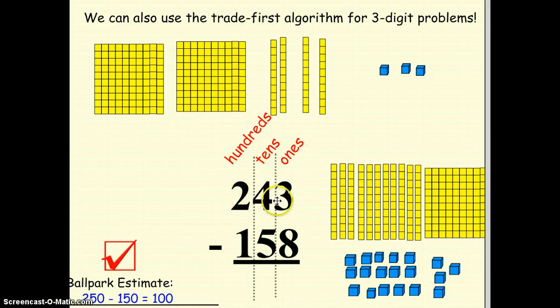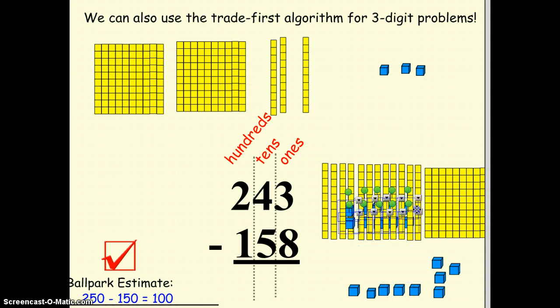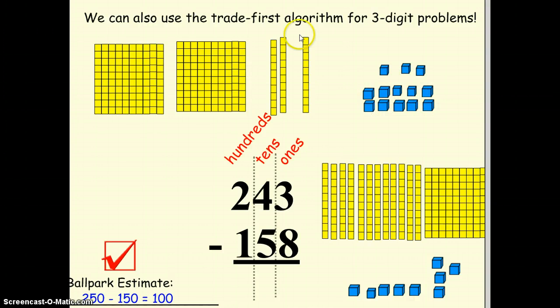So I've shown 243 in base-10 blocks here, and I'm going to start taking away. But you'll notice that there's a couple trading things that I need to do first, because I only have three ones and I don't want to take away eight. So let me trade out that one ten stick there. I'm going to put in 10 cubes, put that up here, and I can show that on paper by saying, hey, I took one of those ten sticks, leaving me with three tens, and since I added 10 cubes, 10 ones, that gives me 13 total ones.